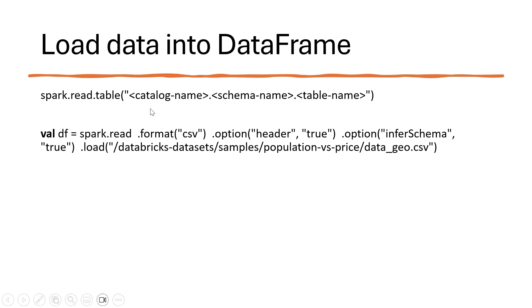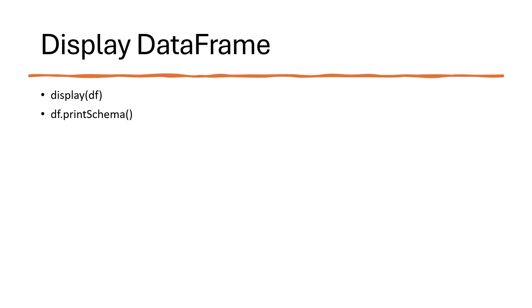To create a DataFrame from a CSV file, we use spark.read.format and specify a few options: the format is CSV, set header to true if a header is available, set inferSchema to true so Spark infers the schema automatically, and then provide the load location of the file. Spark has designed these APIs to be very simple — just a few parameters and the DataFrame is ready. These are the two main ways of reading data into a DataFrame.